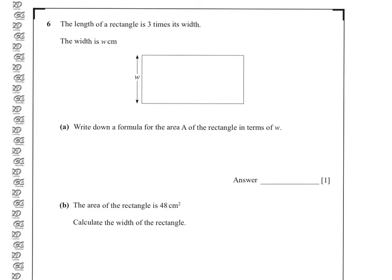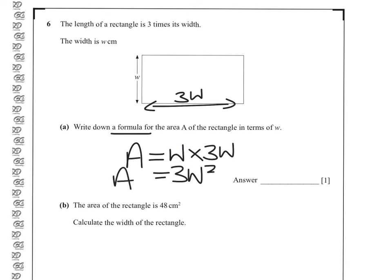We need to be careful here of what it's asked for in the question. We've been asked for a formula for A, which means we want to know what A equals. And the width is 3 times, so we have 3W. So A is W times 3W. We'll get marks if we leave it like that, but we can simplify it. W times W is 3W squared, so A is 3W squared.